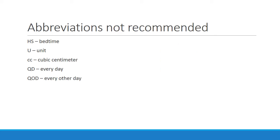Some abbreviations are no longer recommended for use: HS for bedtime, U for unit, CC for cubic centimeter, QD for every day, and QOD for every other day. When written out, these can easily be mistaken for other things, so it's best not to use them if you can help it.